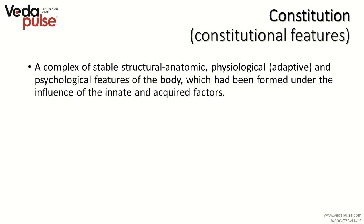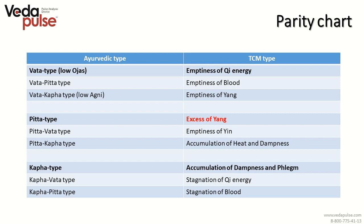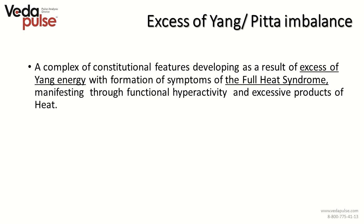Knowing predispositions to diseases, the specialist can perform preventive treatment, which is the highest level of the art of healing. The set of characteristics is determined by a certain combination of three regulation systems: Vata, Pitta and Kapha Doshas. They form nine subtypes, and the tenth type is the ideal combination or balance of Doshas, called Tridosha. Highlighted in red is the type we are going to discuss today — it is Pitta type or excess of Yang.